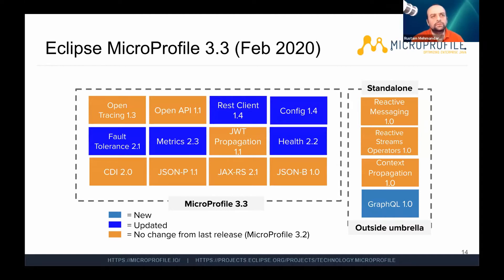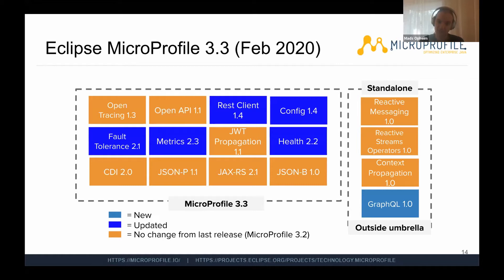Some of these things are kind of required by the cloud-native environment you'll be running on. If you're doing Kubernetes, you want to check health and readiness. Metrics are tailored in Prometheus format so Prometheus can read that endpoint with no hassle. Config is very suitable for using config maps in Kubernetes. There was a very conscious idea by the founders that MicroProfile should be easy to run on Kubernetes.